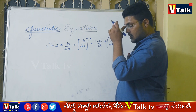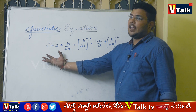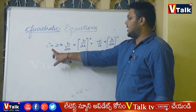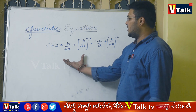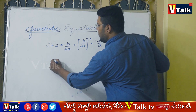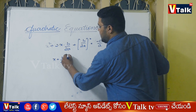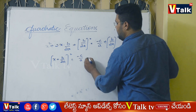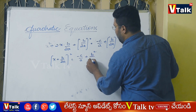Now applying the a plus b whole square identity — a squared plus 2 into a into b plus b squared — with a equal to x plus b by 2a, the left side becomes x plus b by 2a whole square, equal to minus c by a plus b squared by 4a squared.